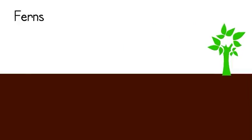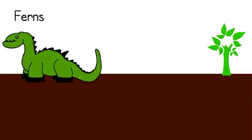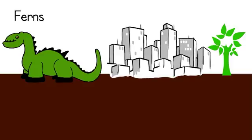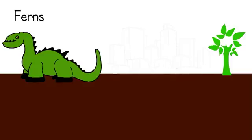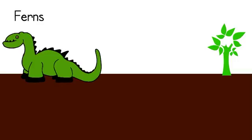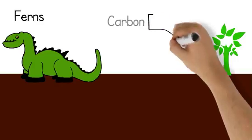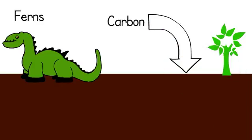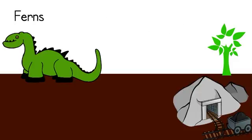Ferns were around when dinosaurs ruled the planet. There used to be ferns as tall as trees and buildings. Back then, the earth was warmer, wetter, and had more oxygen. With more oxygen, insects were larger. You can think of this as sort of a swamp planet. Ferns slowly absorbed carbon from the atmosphere and put it into the ground over long periods of time. These ferns turned into fossils. We now use these fossilized ferns that we call coal to burn and light our cities.